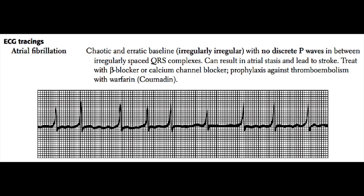Because the atrium is not contracting properly, blood clots can form in the left and right atrium. Therefore, most patients left in atrial fibrillation are placed on blood thinners and anticoagulants such as warfarin (Coumadin). In general, you also want to control the rate of ventricular contractions. If you leave a patient in atrial fibrillation, you usually put them on medications such as beta blockers or non-dihydropyridine calcium channel blockers such as diltiazem or verapamil to control the ventricular rate.